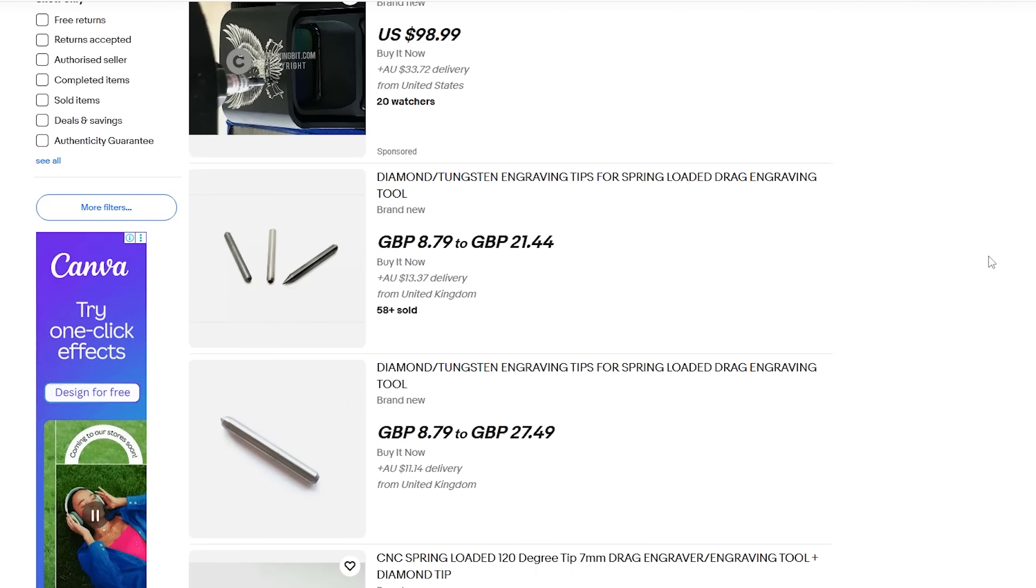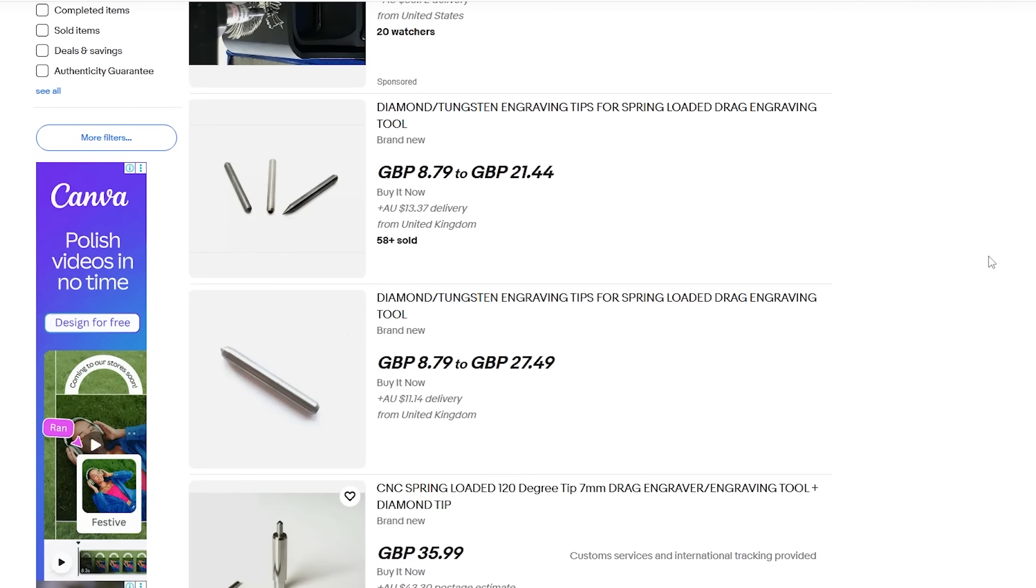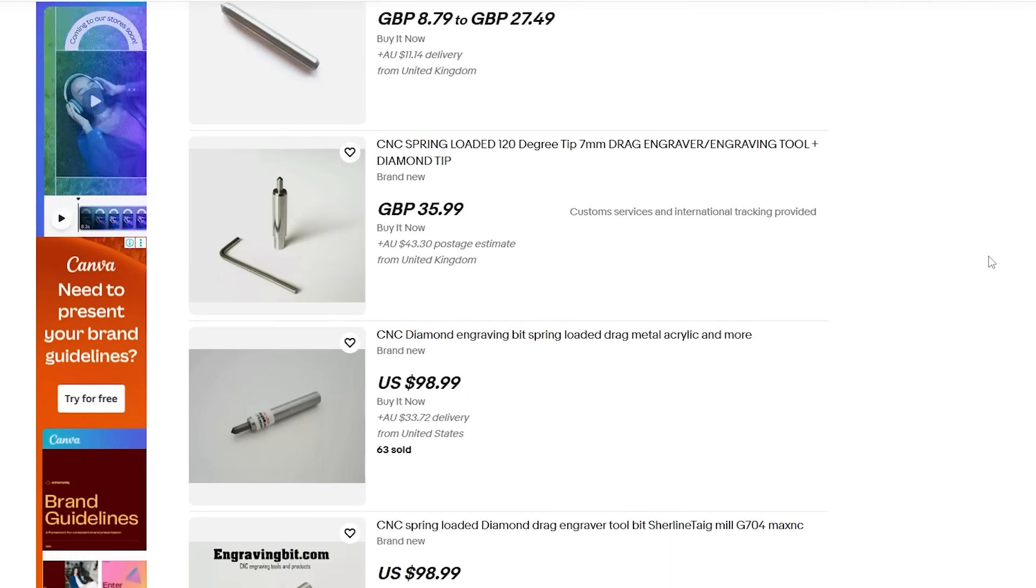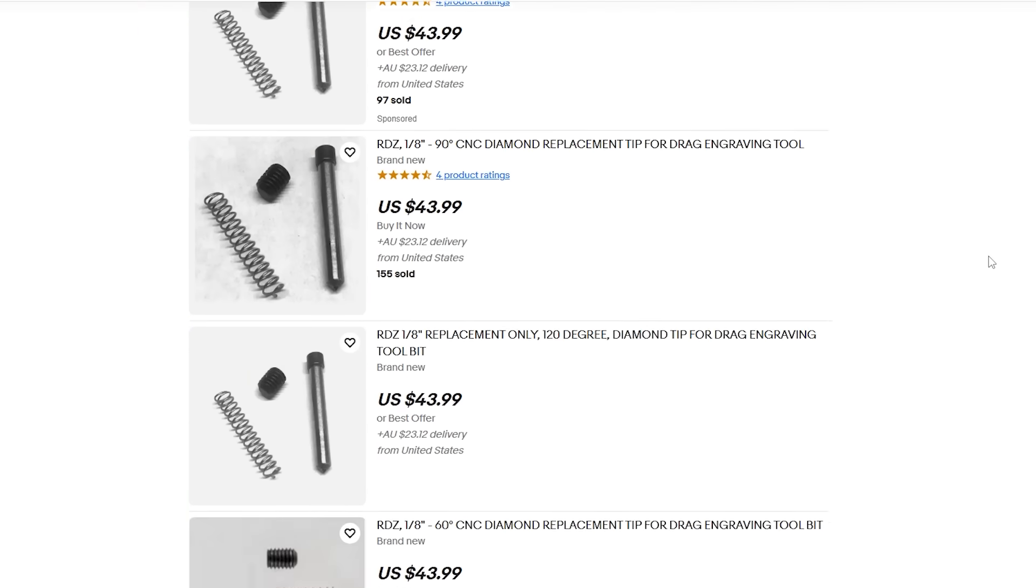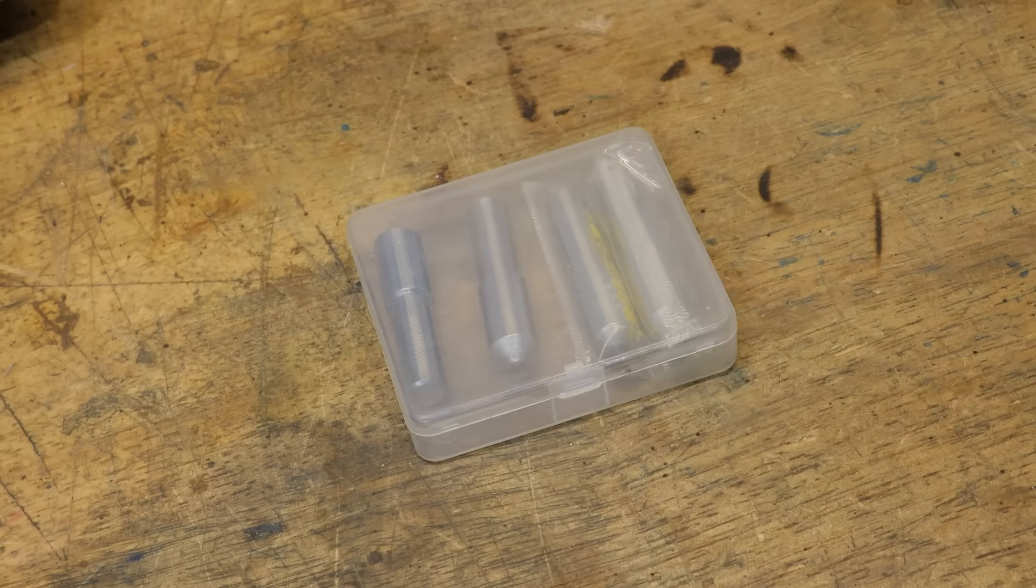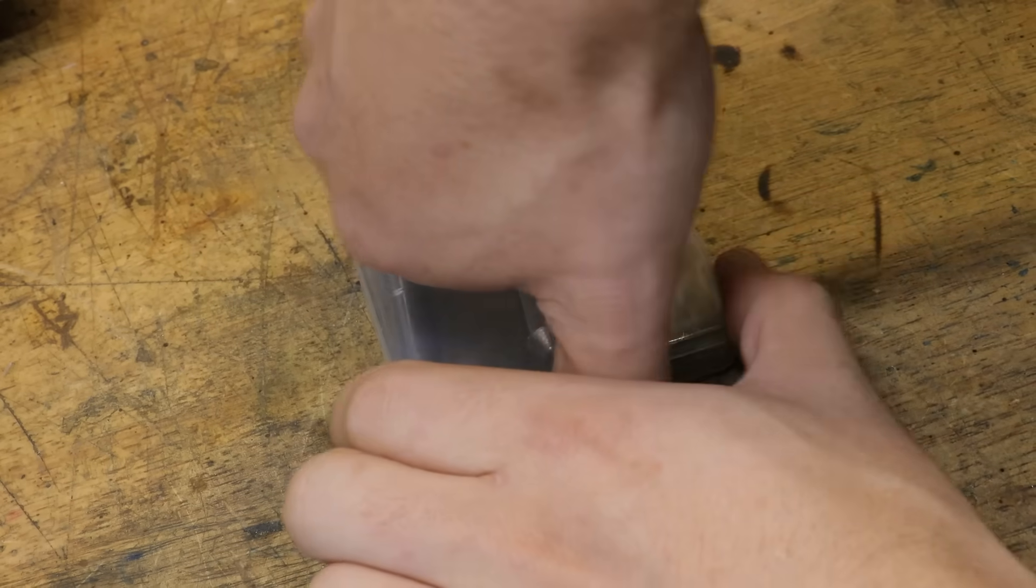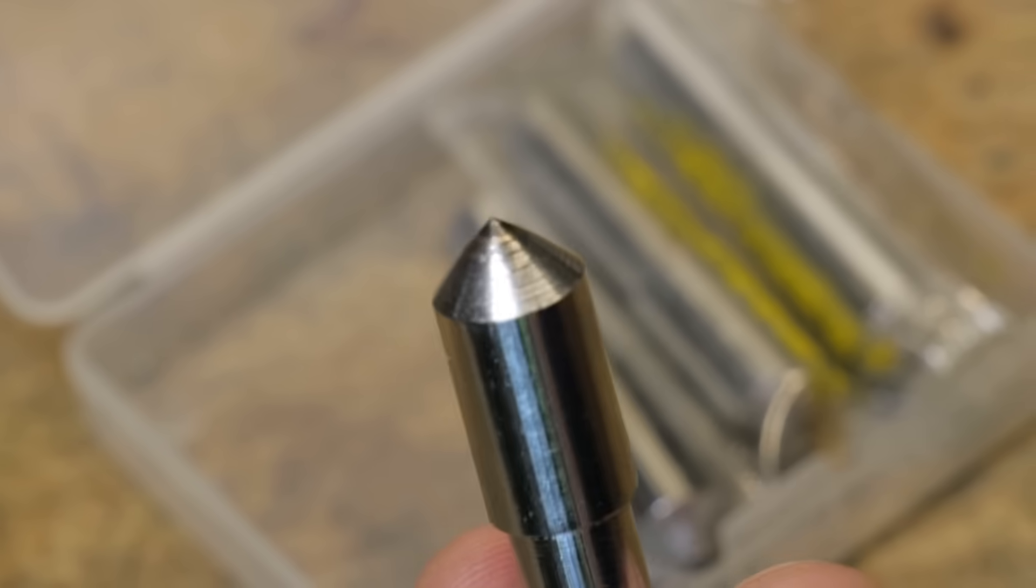Now the only real challenge here was to try and get that diamond tip cutter. Just looking online, the cutters themselves tend to be pretty expensive, at least if you buy them specifically for a drag engraver. Instead, what I'm going to use are these single point diamond tip dressers, which you can get on eBay for about 10 bucks.